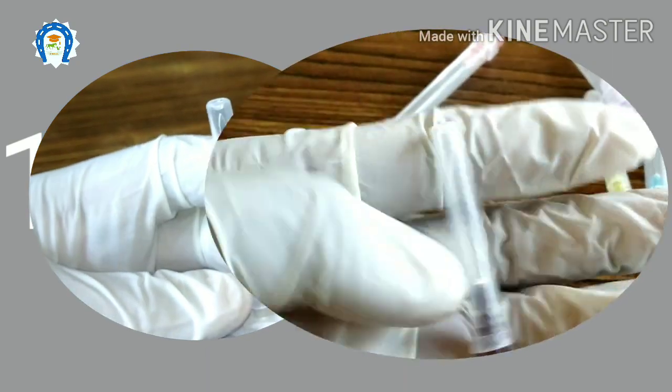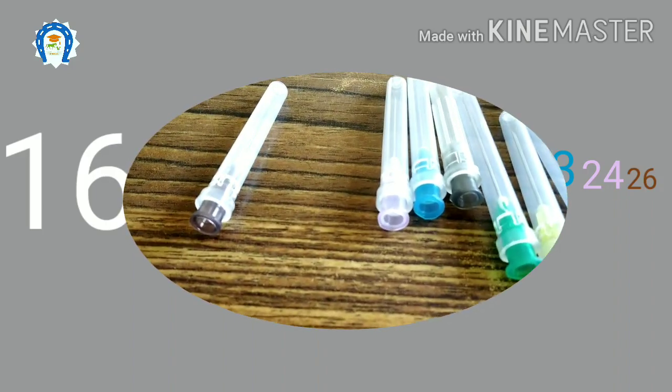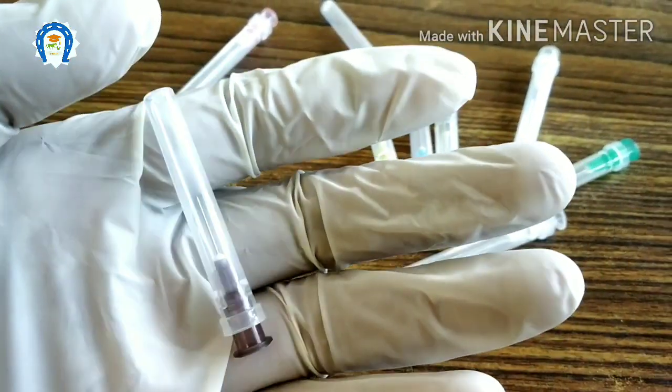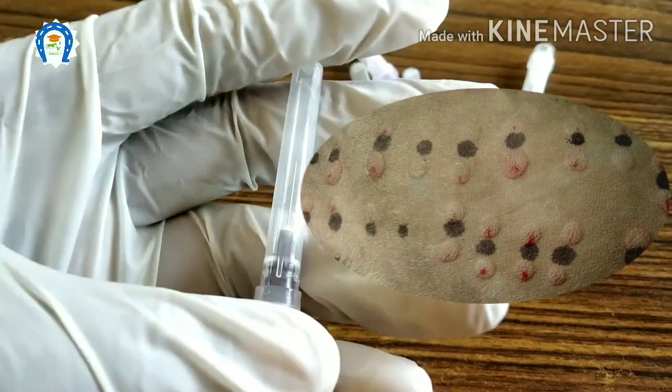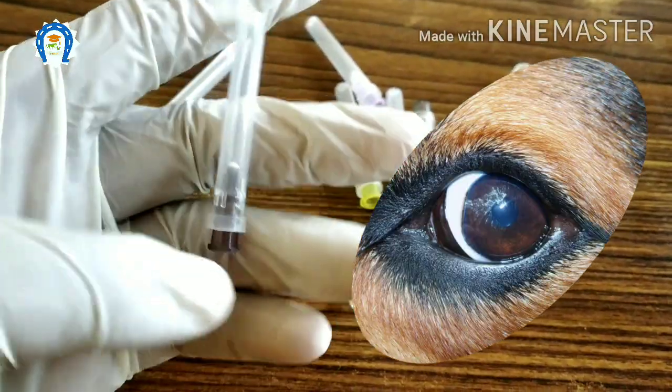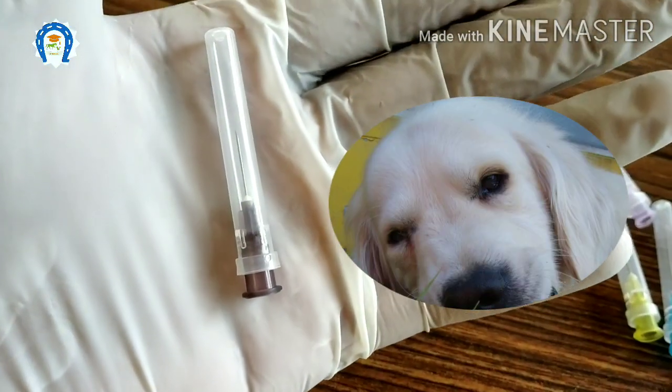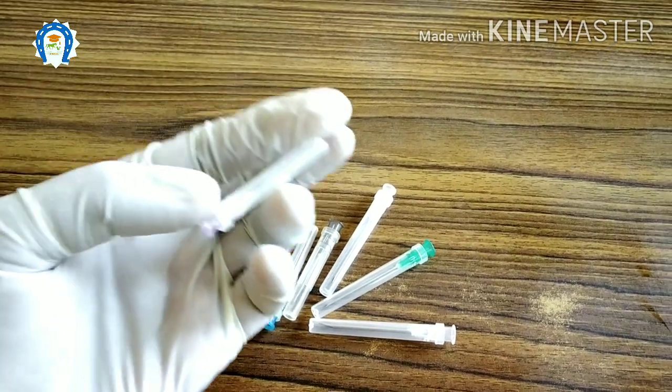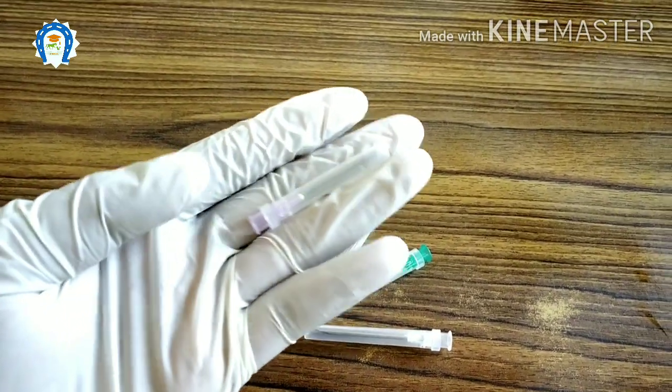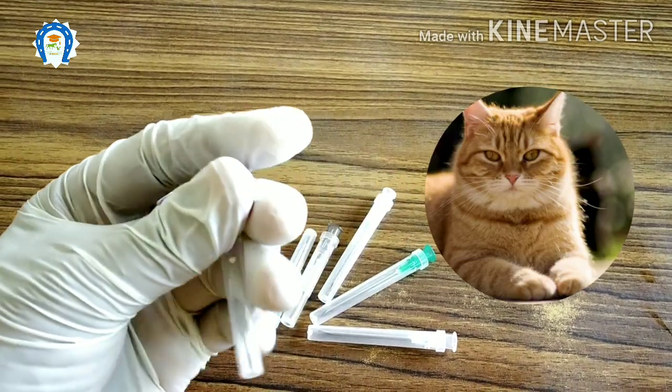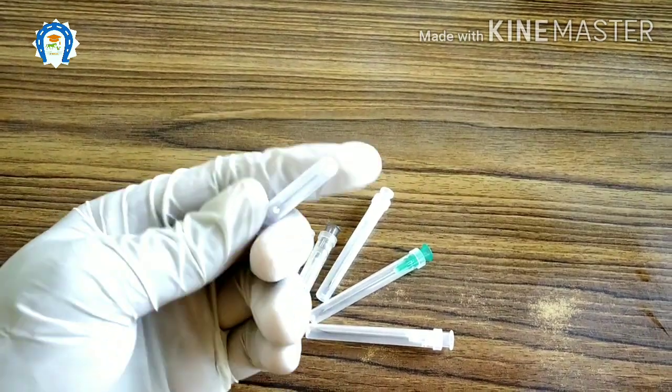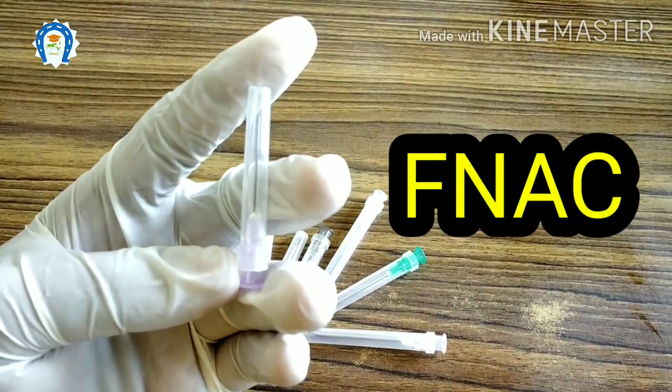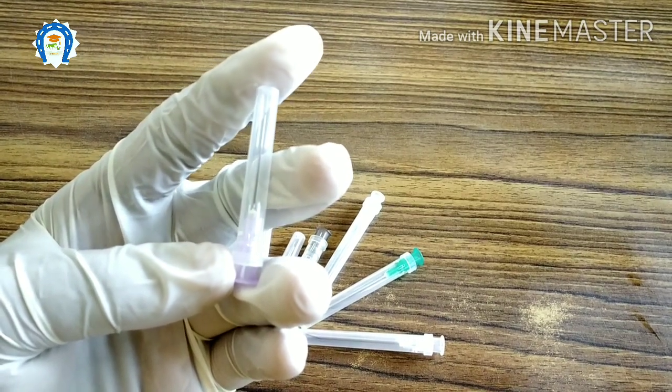Now we will see the needles one by one. First, let's start with the smaller size needle. This is the 26 gauge needle. This is brown in color. This is commonly used to give intradermal injections. We can use this for subconjunctival injections, and this is the ideal needle for fine needle aspiration cytology studies. This is suitable for birds also.